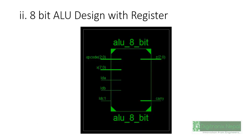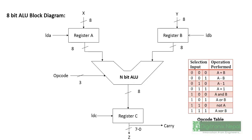Now let's move to the 8-bit ALU design with register. There is no register defined in the 2-bit ALU, so we now design an 8-bit ALU with register. The 8-bit ALU has a 3-bit opcode, two 8-bit inputs, a selection line, an 8-bit result output, and a single-bit carry output. Looking at the block diagram, we have Register A, Register B — we will design a register, which is a type of memory built from flip-flop logic.